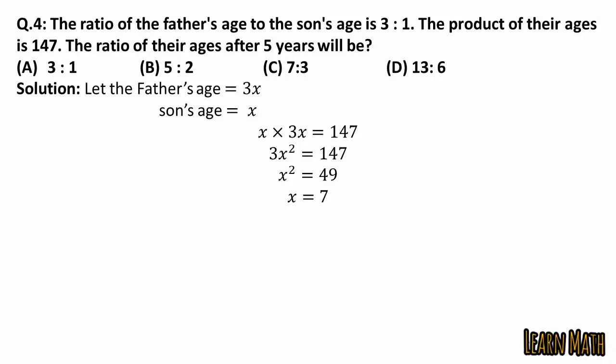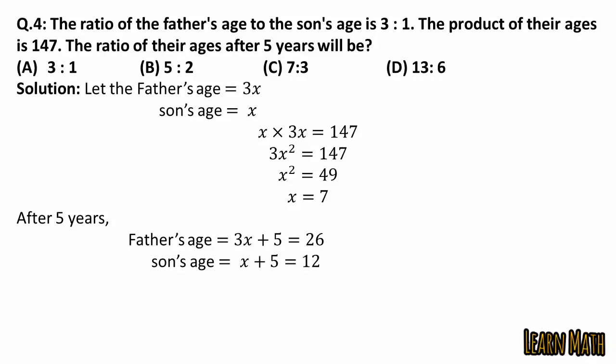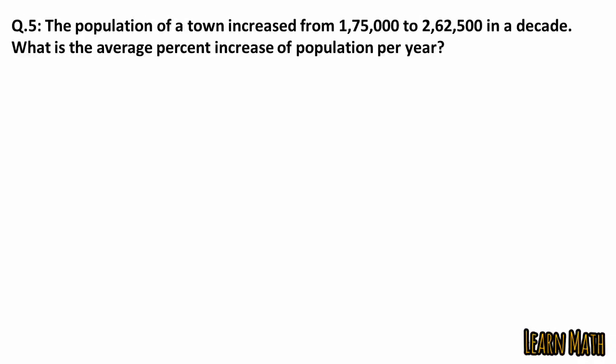After five years, the father's age will be 3x plus 5. Putting x equals 7, we get 26. The son's age after five years will be x plus 5. Putting x equals 7, we get 12. So the ratio is 26:12, which simplifies to 13:6. The correct option is option D.